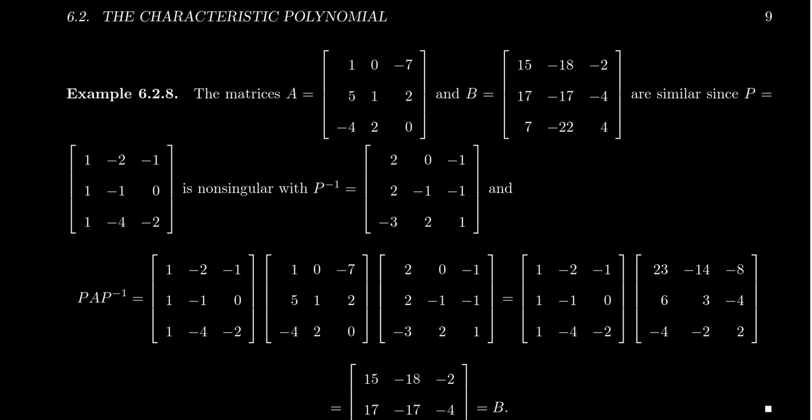Let me give you an example of similar matrices. Take matrix A, which is this 3×3 matrix: 1, 0, −7 / 5, 1, 2 / −4, 2, 0. And take this other matrix B, also 3×3: 15, −18, −2 / 17, −17, −4 / 7, −22, 4. I claim that these two matrices are similar to each other.